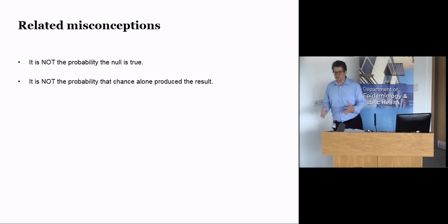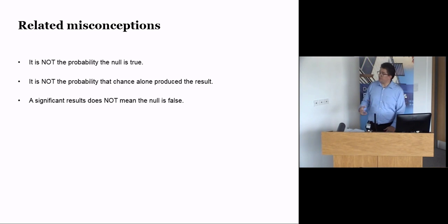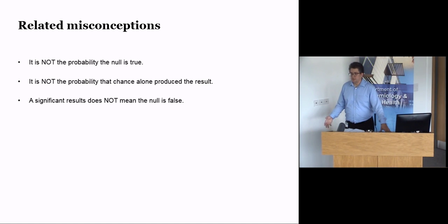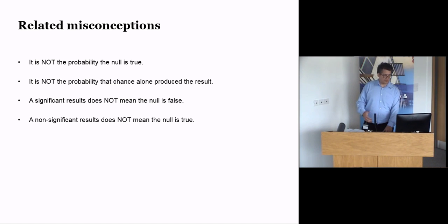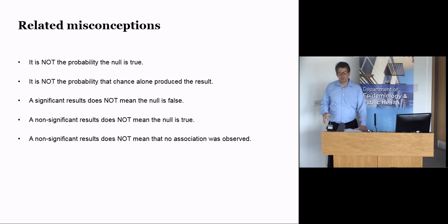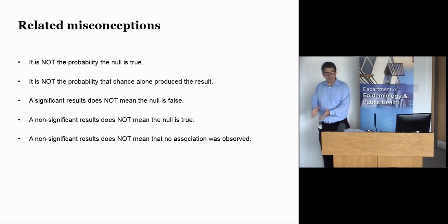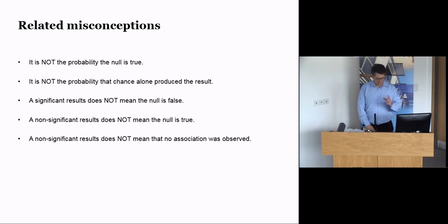Some related misconceptions: it's not the probability the null is true; it's not the probability that chance alone would produce a result; a significant result does not mean the null is false — it just means the data are incompatible with the null; a non-significant result does not mean the null is true; and a non-significant result does not mean no association was observed. If you get a non-significant result but an effect size of two standard deviations, you didn't see nothing — that effect size hasn't gone away.